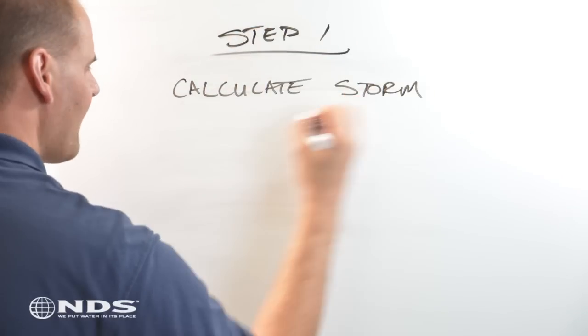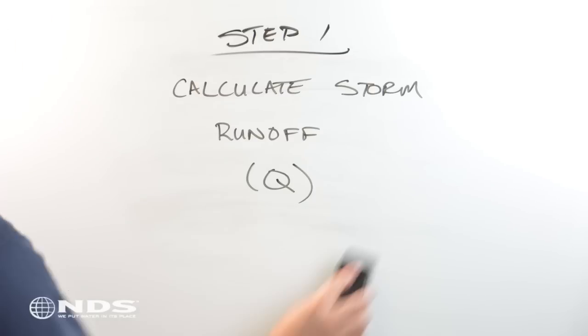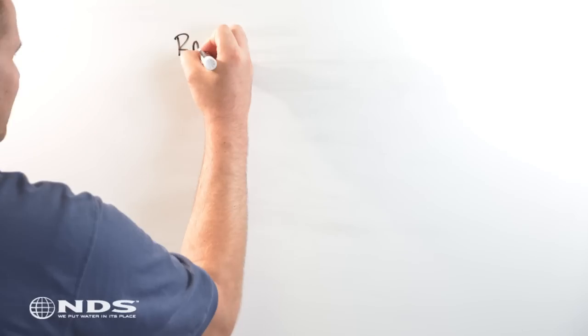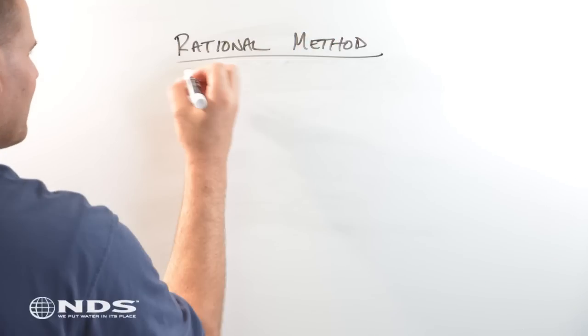Step 1: Calculate storm runoff. I am going to use the rational method. There are several methods that can be used to calculate drainage. The rational method is probably the easiest and most widely used method.